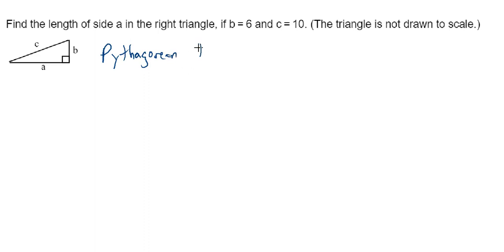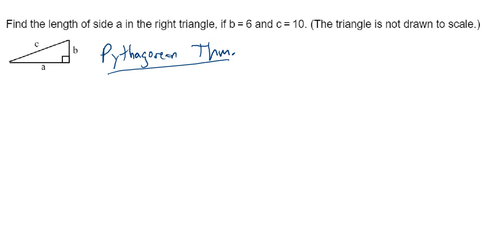The Pythagorean theorem says that the sum of the squares of the lengths of the shorter two sides must equal the square of the longest side, which is often called the hypotenuse. The way I learned this in school was A squared plus B squared equals H squared — not A squared plus B squared equals C squared, which seems like how everybody knows it now. I kind of like calling it H squared to distinguish that one from the other two sides.